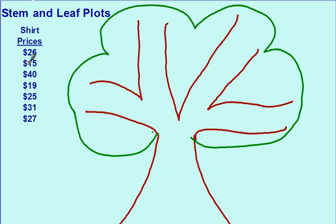You want to look at the tens place of these. You can see that all of these shirts are in the teens, the twenties, the thirties, or the forties. So you need to make your stems accordingly. So the first stem will be the teens. So one, two, three, and four. This will be for things in the tens, twenties, thirties, and forties.